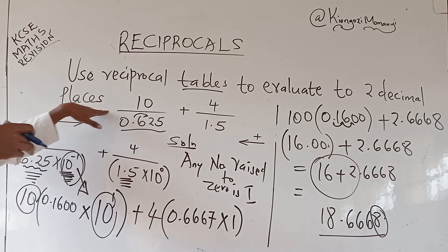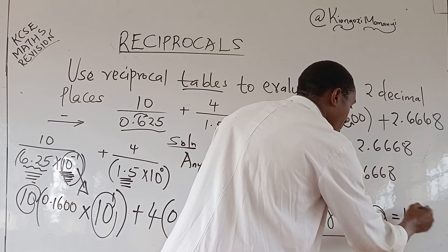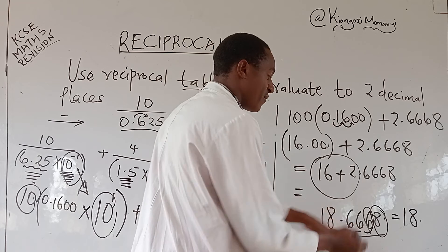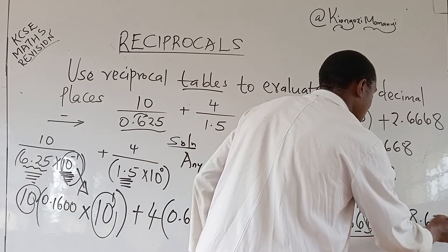Now, obey the question. Two decimal places. The answer that gives you a mark is 18.12. Check on the third. It is more than 5. Then it affects the 6 here. So now 18.67.